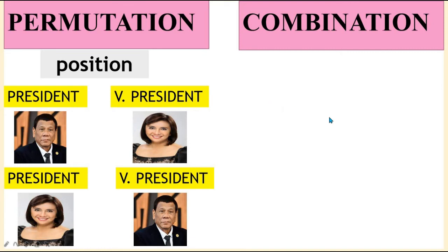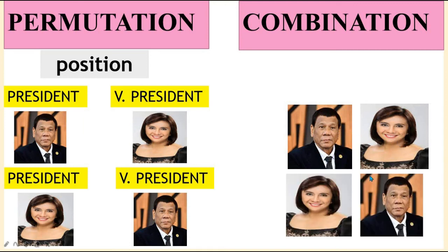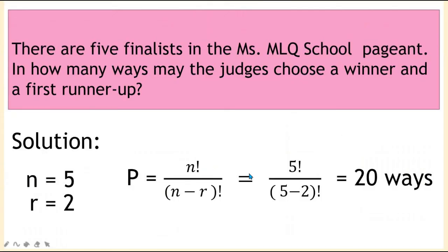But if there is no designation or position in a group, Mr. Duterte and Mrs. Robredo, or Mrs. Robredo and Mr. Duterte, is counted as one only. So if this is a random group, this is combination.